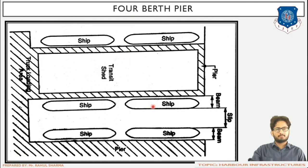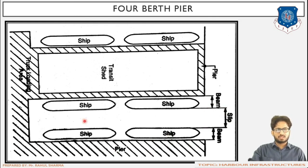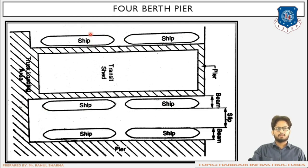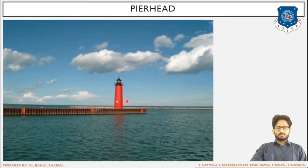The four-birth pier has four ships berthed simultaneously. Labels are: beam (width of ship), slip (transverse clearance of three to four times ship width), and transit shed for short-term storage adjacent to the loading and unloading platform. In a pier and jetty, berthing can be done in both directions, whereas in a wharf and quay, berthing is done in only one direction.